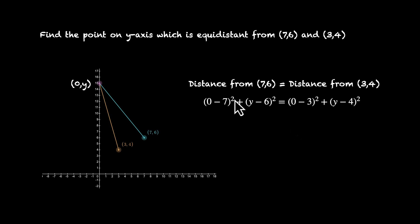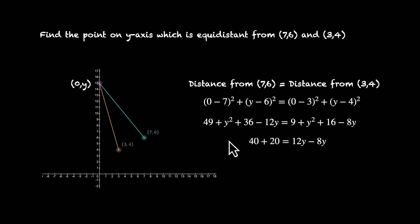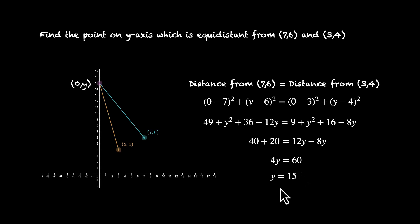7² = 49, (y−6)² = y² + 36 − 12y, 3² = 9, and (y−4)² = y² + 16 − 8y. y² cancels from both sides. 49 − 9 = 40 and 36 − 16 = 20, something very similar to the previous problem. 40 + 20 = 60, and moving the y terms: 12y − 8y = 4y. So 4y = 60, which means y = 15. The point is (0, 15), which we can verify from the image as well.